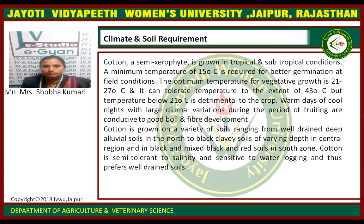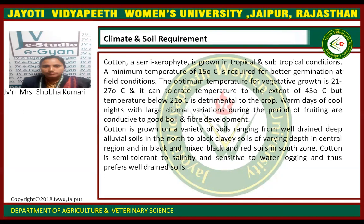Climate and rainfall requirement. Cotton is a semi-xerophytic plant grown in tropical and sub-tropical conditions. A minimum temperature of 15 degrees Celsius is required for better germination. The optimum temperature for vegetative growth is 21 to 27 degrees Celsius. It can tolerate temperatures up to 43 degrees Celsius, but temperatures below 21 degrees Celsius are detrimental to growth. Warm days with cool nights and large diurnal variation during the fruiting period are ideal conditions for fiber development.